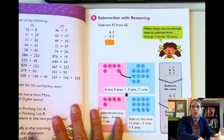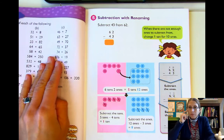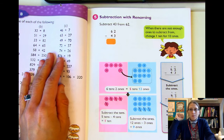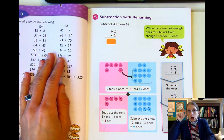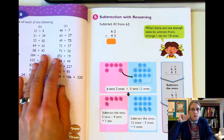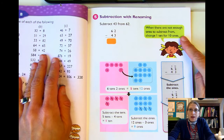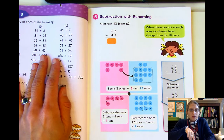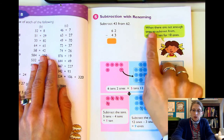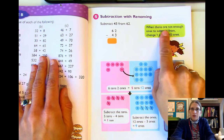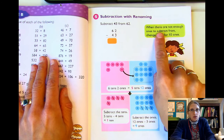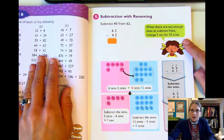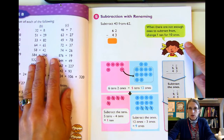We've been working really hard at adding with renaming — when we have too many in the ones place or too many in the tens place, we have to do some renaming. Well, subtraction is similar, except with subtraction we have to rename when there are not enough. With addition, we renamed when there were too many; with subtraction, when there's not enough.